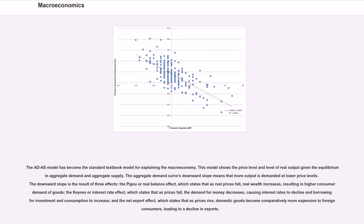The aggregate demand curve's downward slope means that more output is demanded at lower price levels. The downward slope is the result of three effects: the Pigou or real balance effect, which states that as real prices fall, real wealth increases, resulting in higher consumer demand of goods; the Keynes or interest rate effect, which states that as prices fall, the demand for money decreases, causing interest rates to decline and borrowing for investment and consumption to increase; and the net export effect, which states that as prices rise, domestic goods become comparatively more expensive to foreign consumers, leading to a decline in exports.